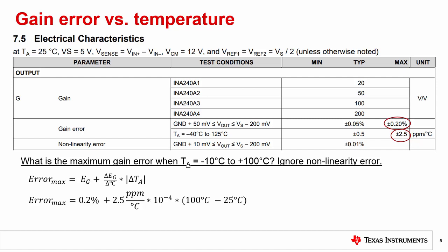Only the largest absolute change from 25 degrees Celsius should be considered because the gain error specification can almost always be positive or negative. Note that an easy way to convert parts per million into percentage is to multiply by 10 to the negative fourth power. So, if we continue with the calculation in terms of percent, the maximum gain error is plus or minus 0.2275%.